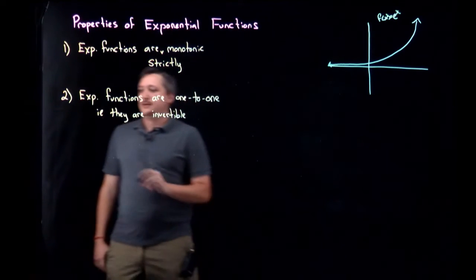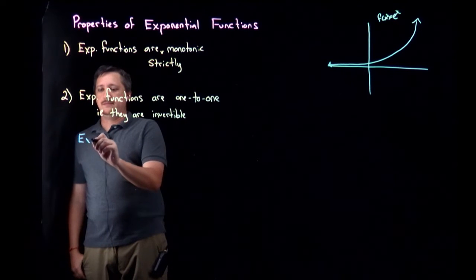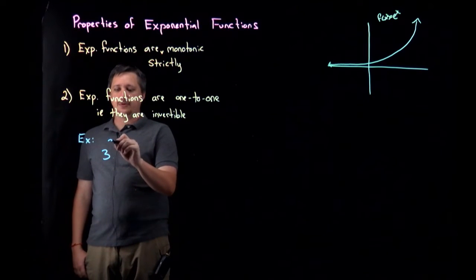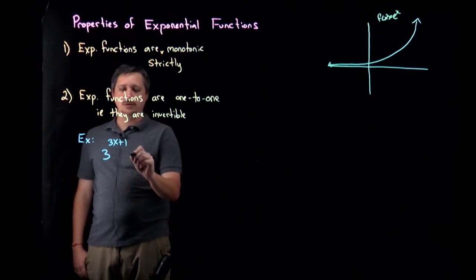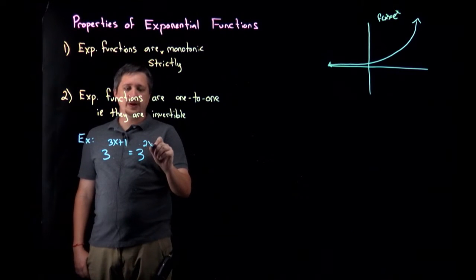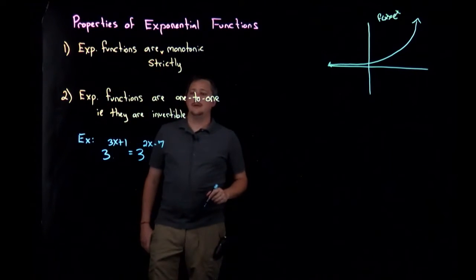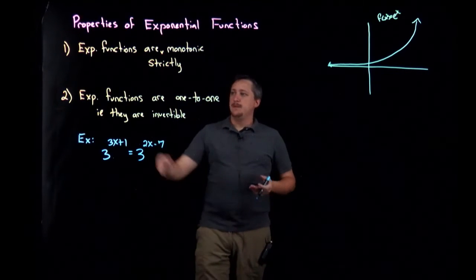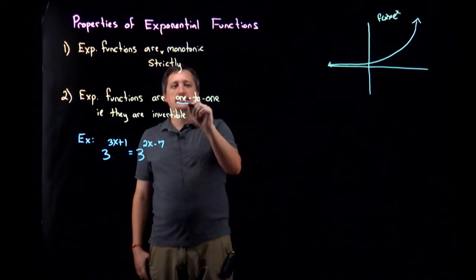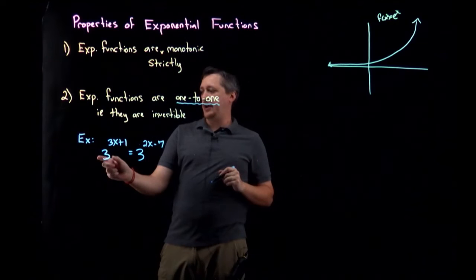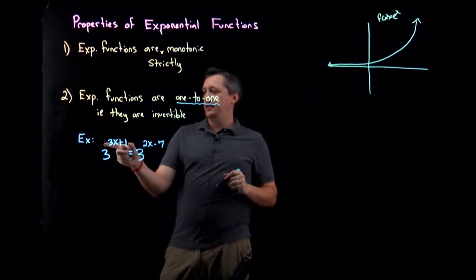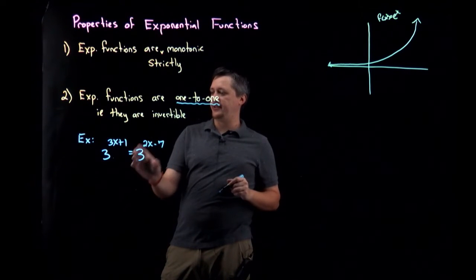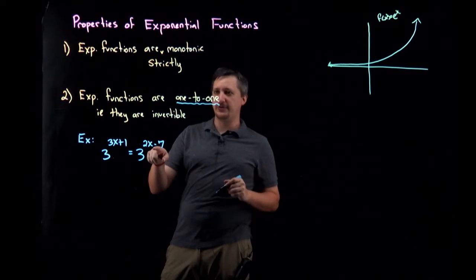Let's say we have something like 3^(3x+1) = 3^(2x-7). If we want to know what x is, the one-to-one thing lets us say that if I have the same base to some different powers, the only way this thing could equal this thing is if the powers are the same.